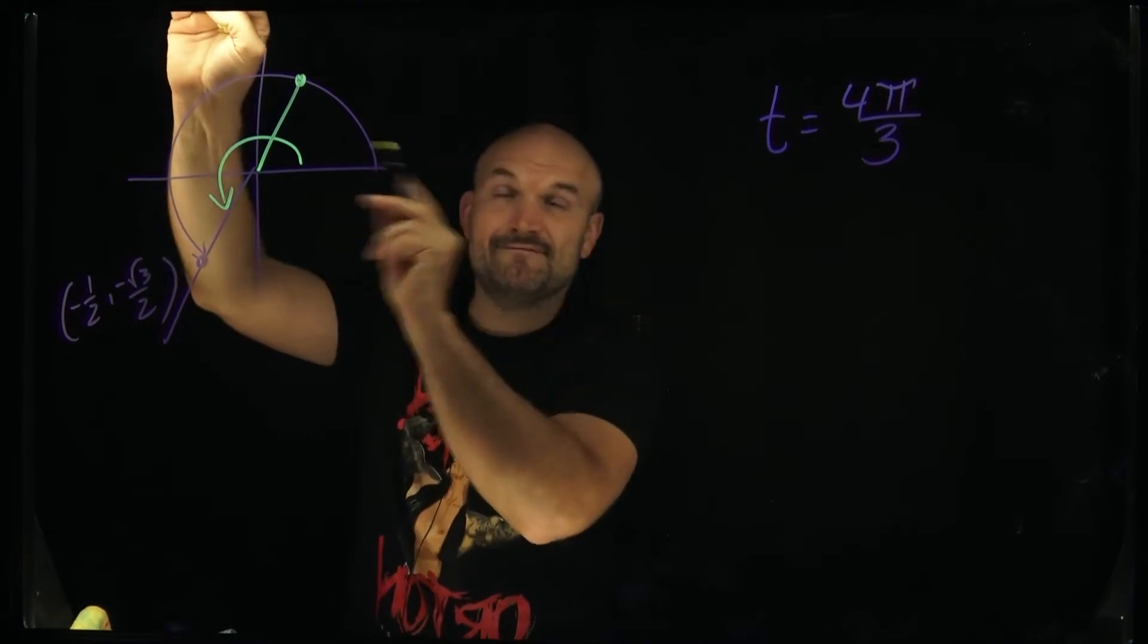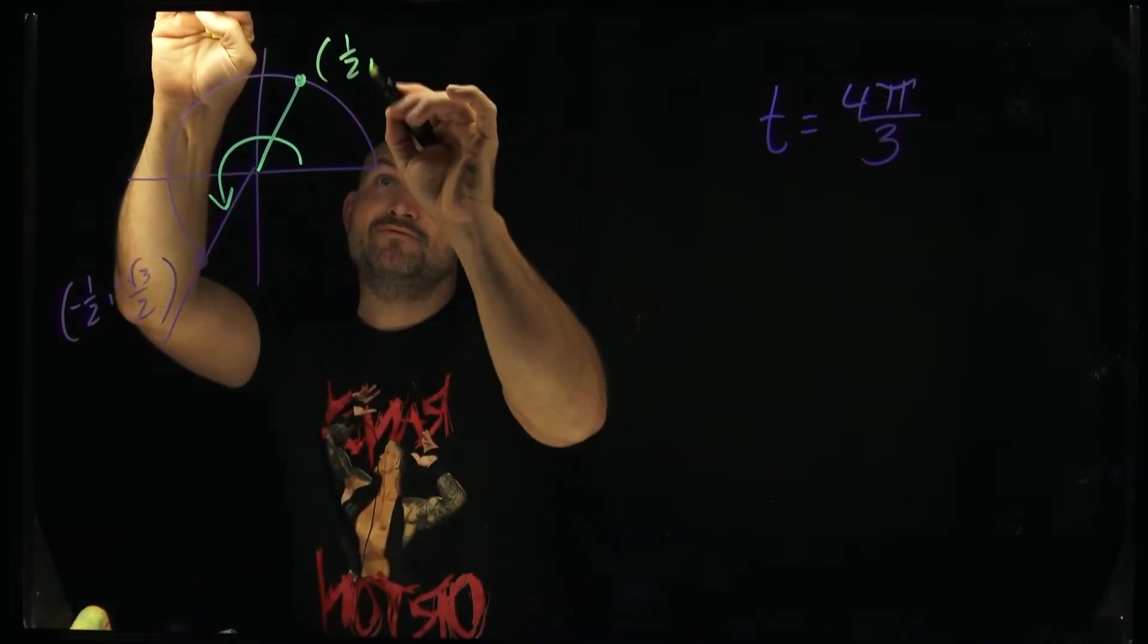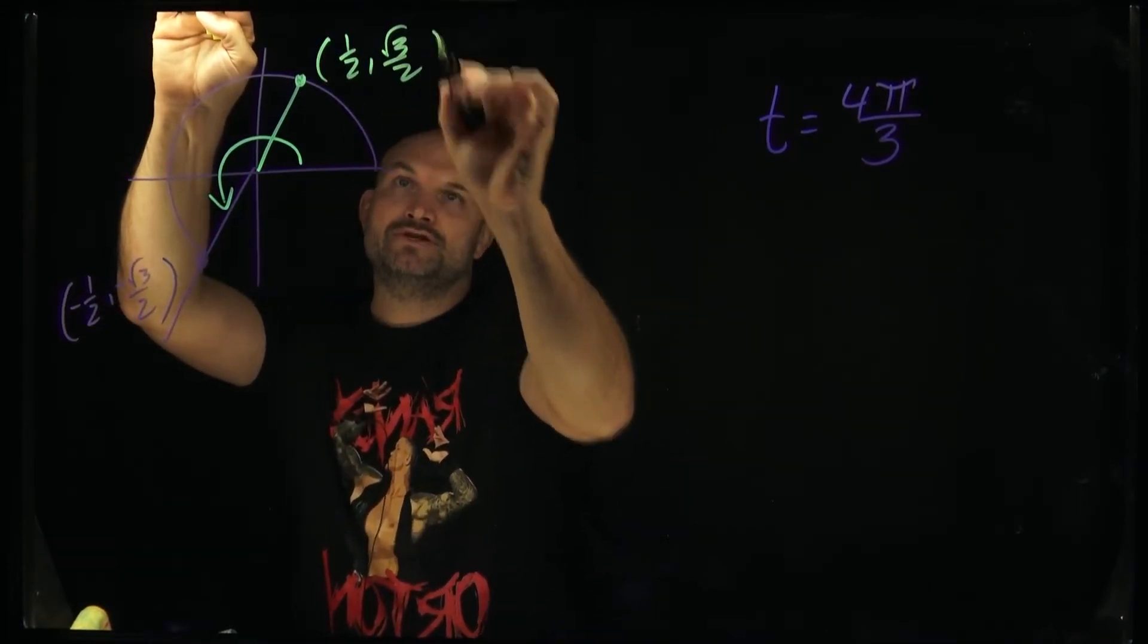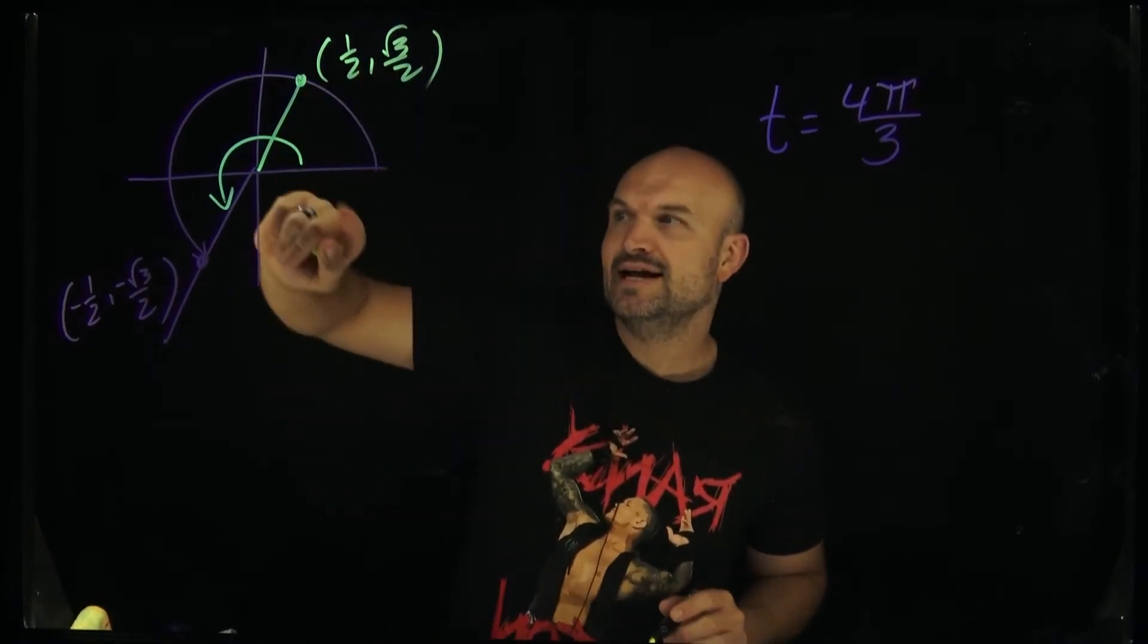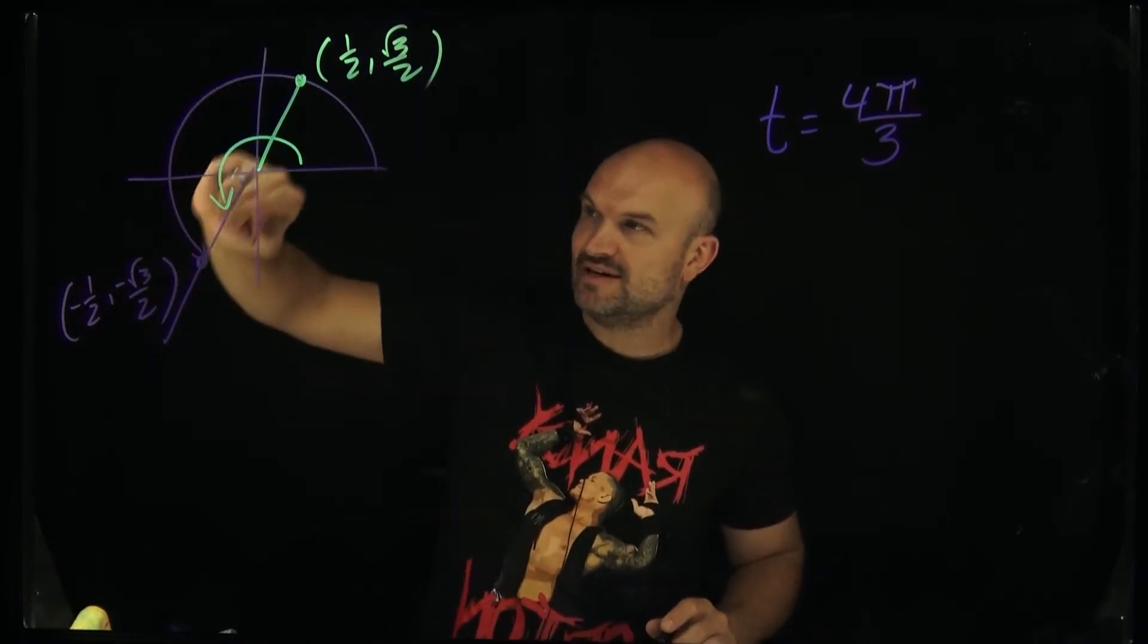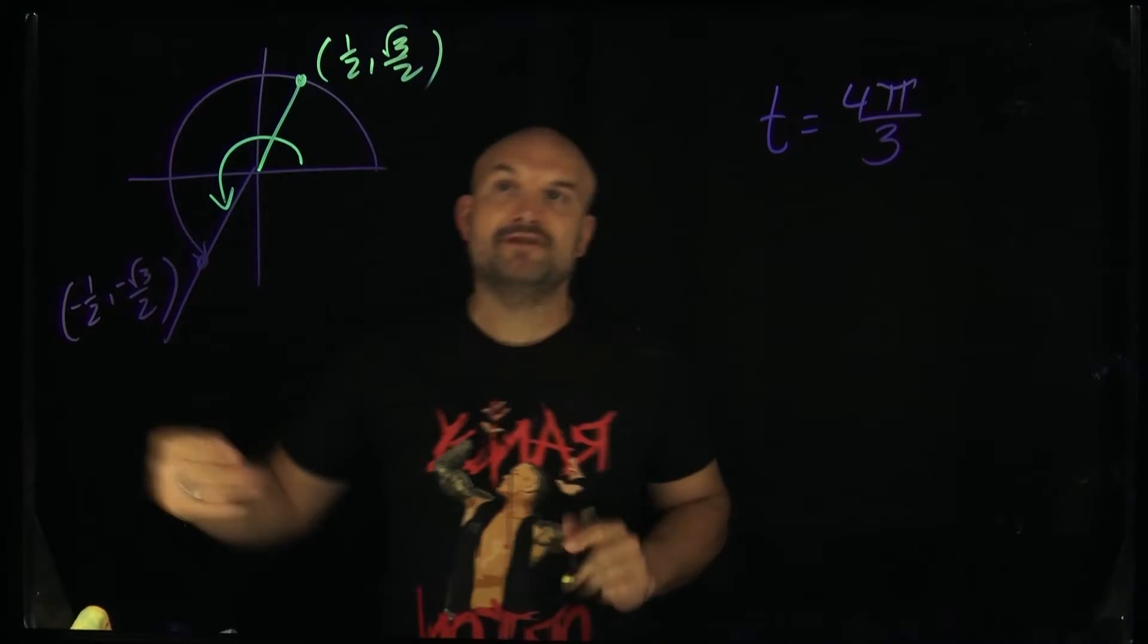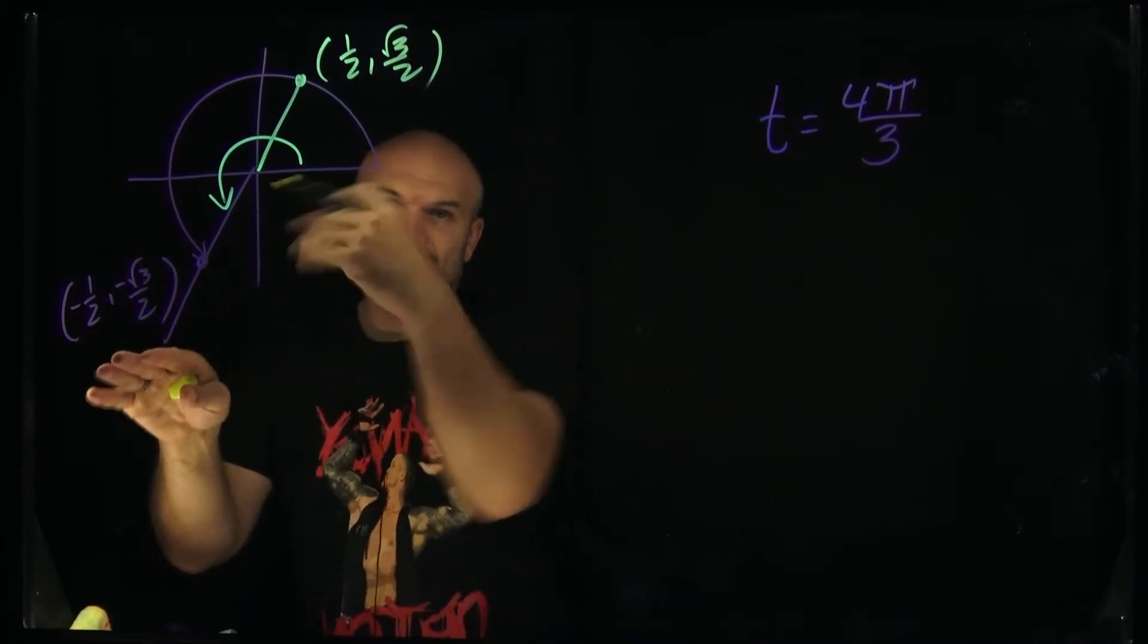This coordinate point in the first quadrant is going to be a positive 1/2 comma square root of 3 over 2. So therefore, if this angle here you can see now is in the third quadrant, well, what's the difference between this point and this point? They're exactly the same.